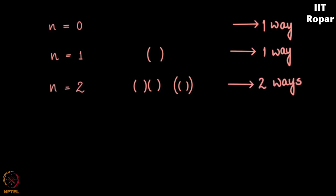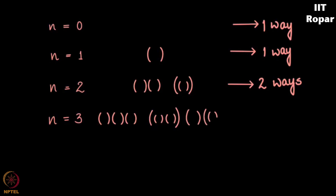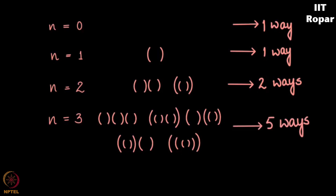When n is equal to 3, that is we have three open and three closed parentheses, all the possibilities are: this one, this one, another one, another one, and the last one — so we have five ways of grouping three pairs of parentheses. When n is equal to 4, you have 14 ways of doing this.